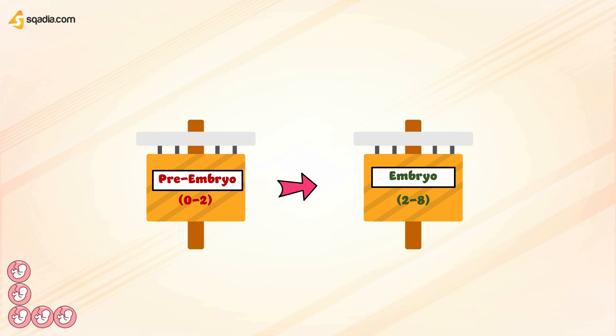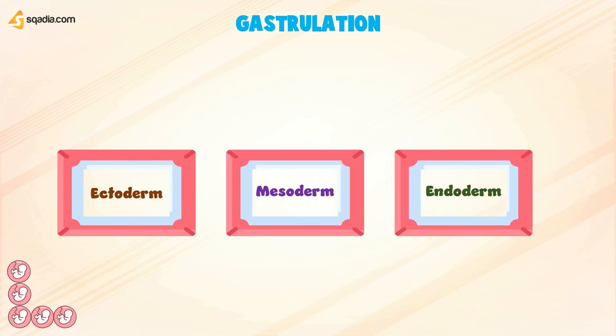The most characteristic event occurring during the third week of gestation is gastrulation. Gastrulation is the process that establishes all three germ layers: ectoderm, mesoderm, and endoderm. But do you know how these germ layers are generated?